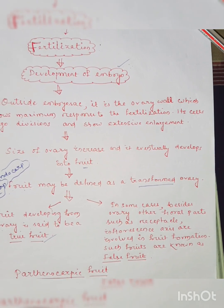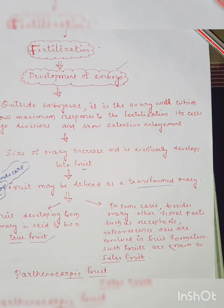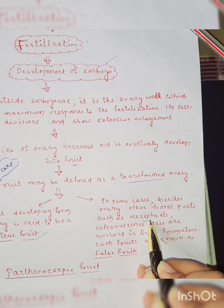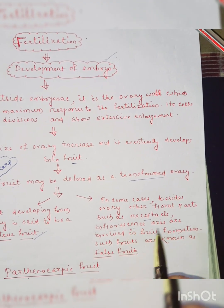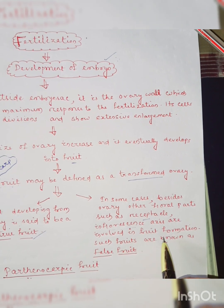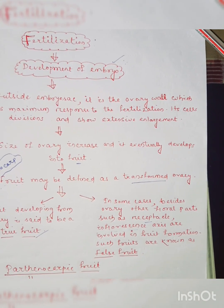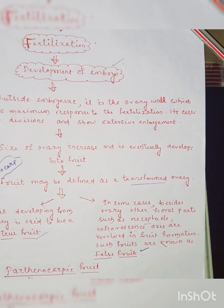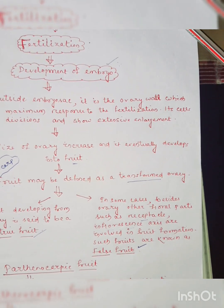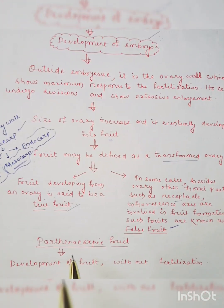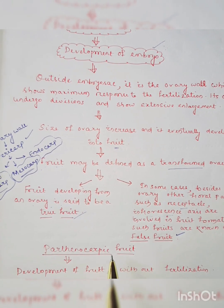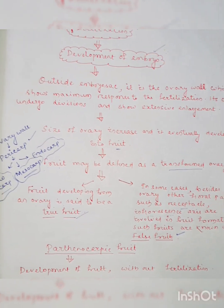But in some cases, besides ovary, other floral parts such as receptacle or thalamus, inflorescence axis are involved in fruit formation. Such fruits are not true fruits. These are called as false fruits or accessory fruits.